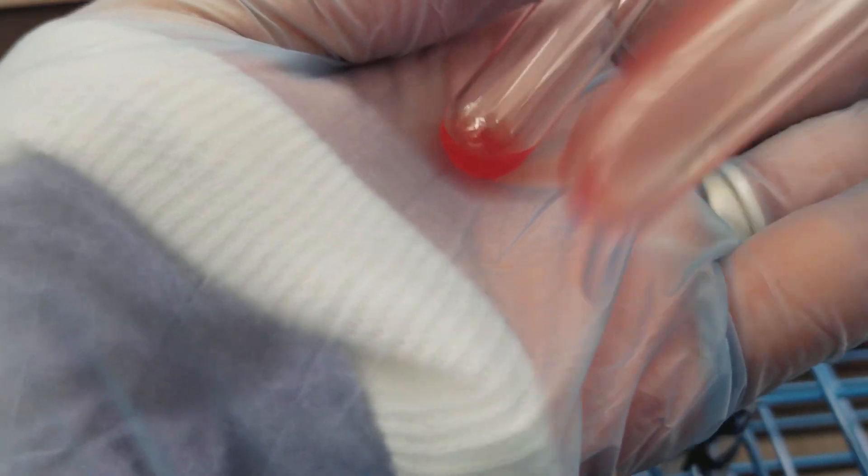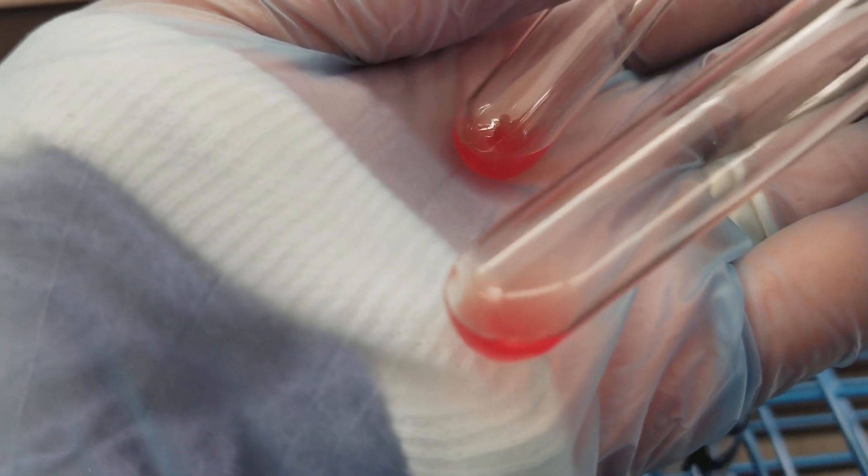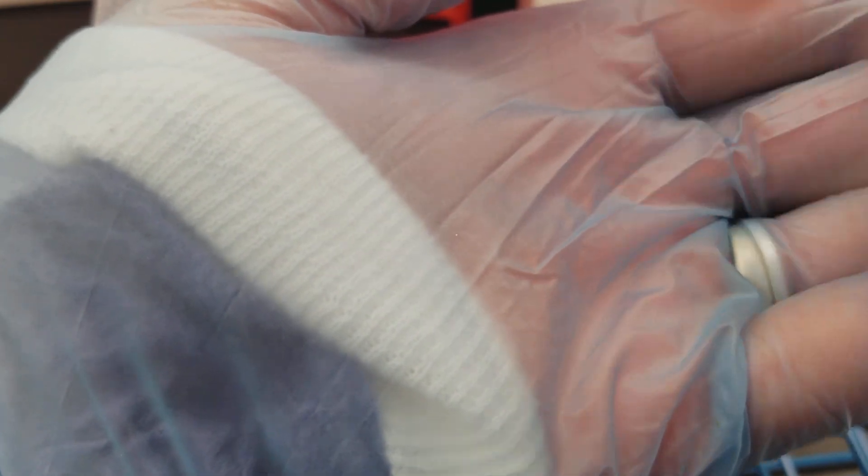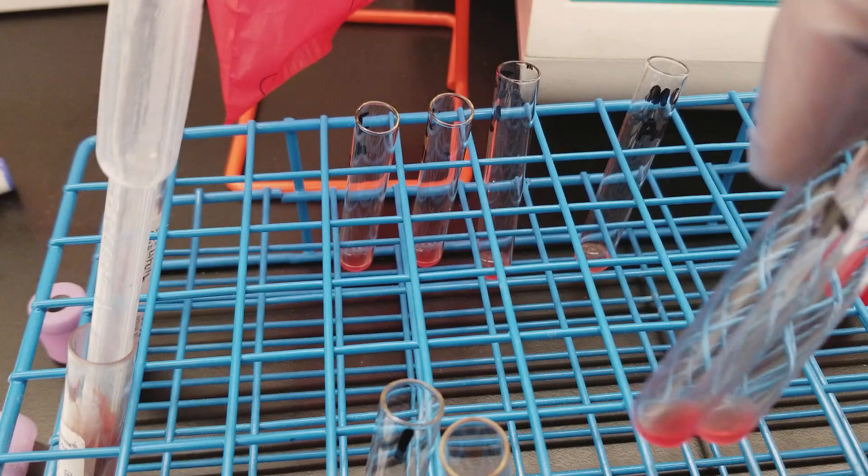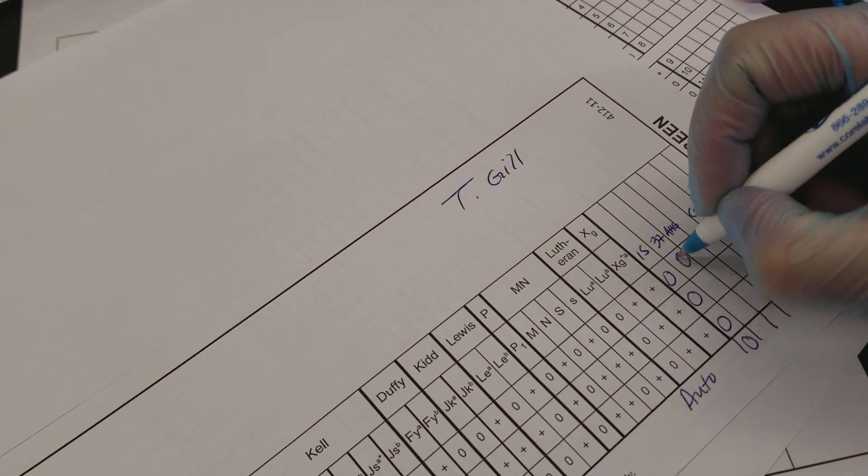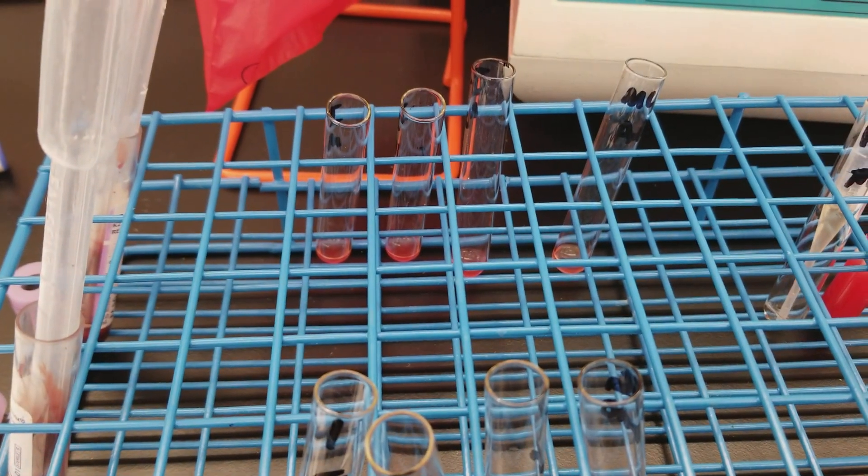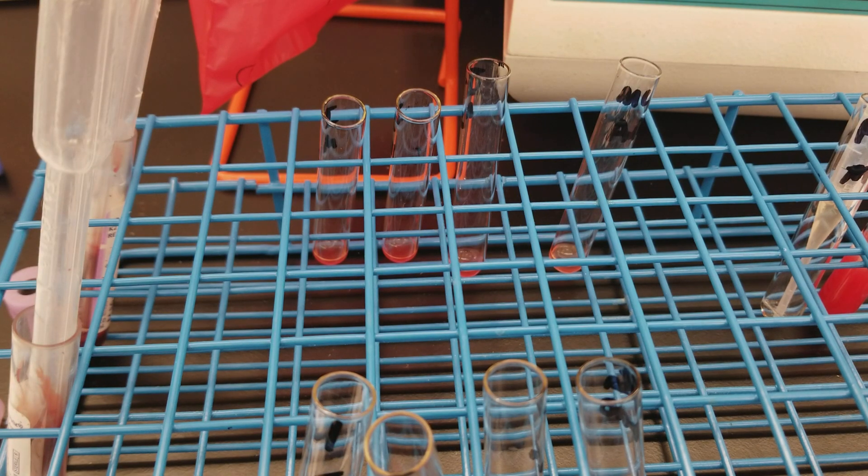These are cells one and two, so they're still negative. This is cell three and the auto control, and those are negative. So this patient is still looking like they're negative. So now we're going to do the wash step.